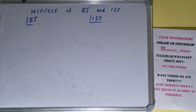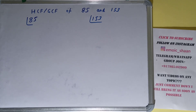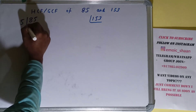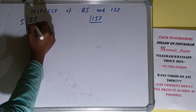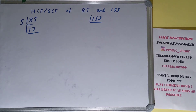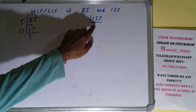We need to prime factorize each of them. We'll start with 85. Is 85 divisible by 2? No. By 3? No. By 5? Yes, and we'll be left with 17. Is 17 divisible by 5? No, because 17 is a prime number, so it is only divisible by itself, and we'll be left with 1. So we are done with this.